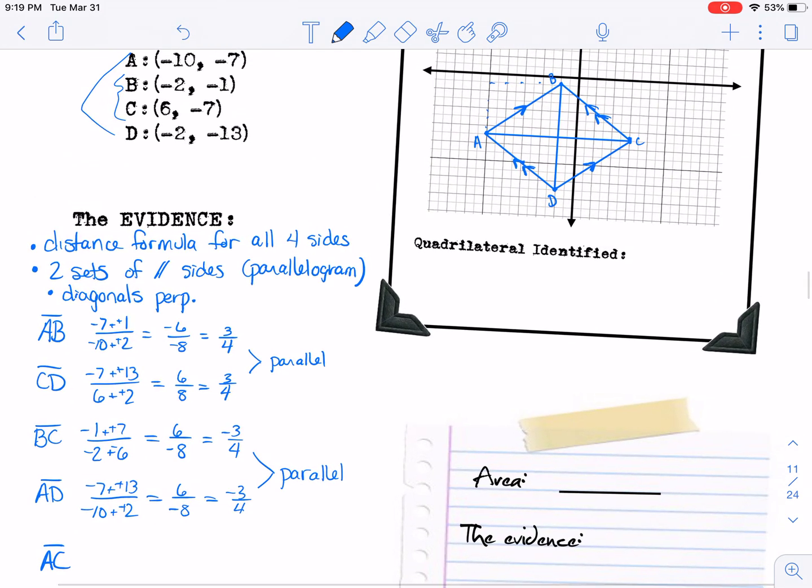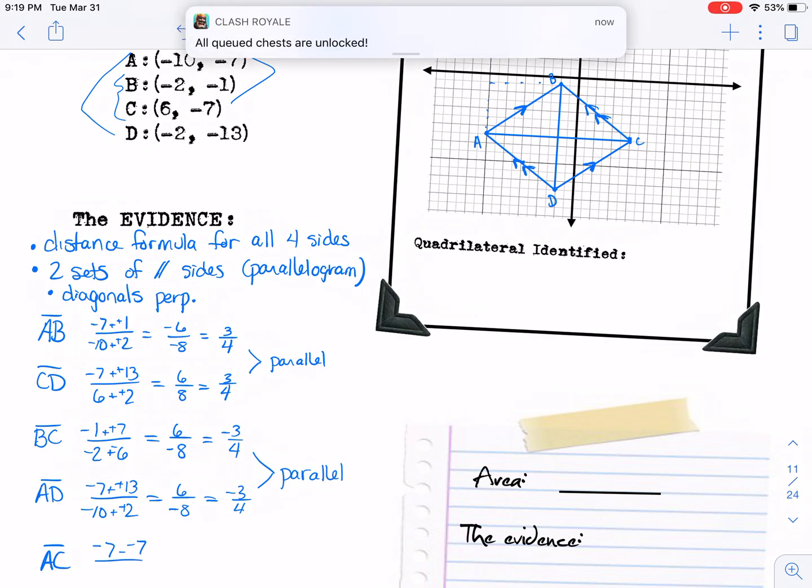So the slope of AC is going to be negative 7 minus negative 7 over negative 10 minus 6. And what you find is the top is 0 because it is a horizontal line. So it really doesn't even matter what the bottom is as long as it's not also 0, which couldn't happen anyway. So that's 0, it's horizontal.